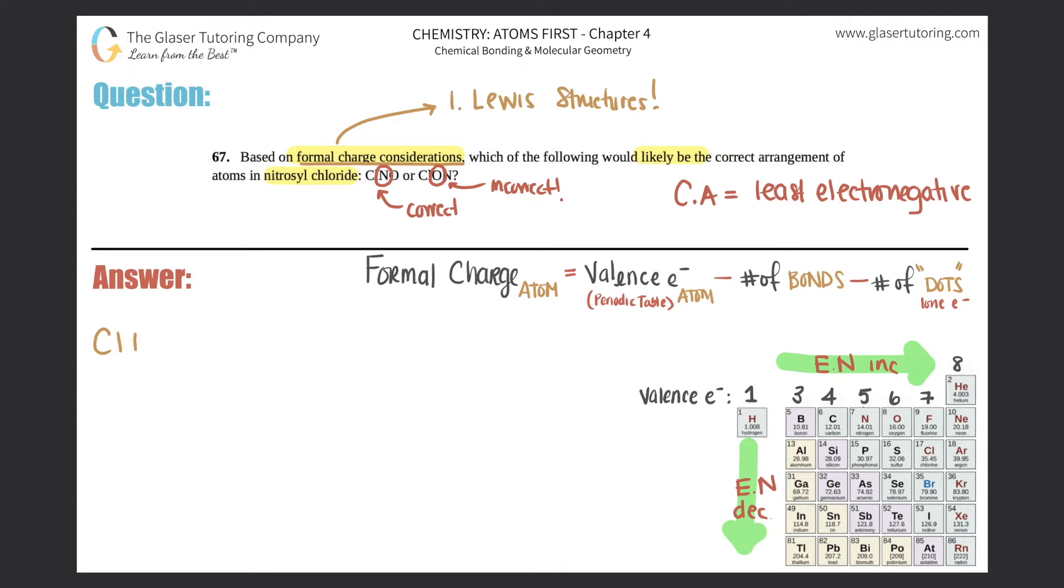I'm just going to give you the compounds because we've already done Lewis structures. So for ClNO, the structure looks like this. You have chlorine single bonded to nitrogen, which will be double bonded to oxygen.